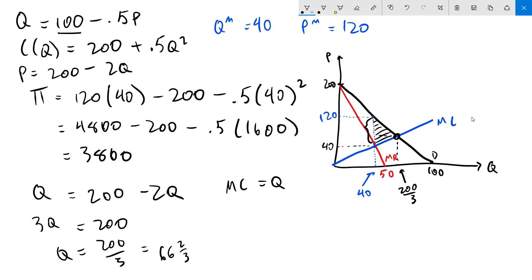We now have everything we need to figure out the deadweight loss. It's a triangle so we have one half times base times height. Base is 120 minus 40. The height is 200 thirds minus 40. This comes out to 3200 thirds which is 1066 and 2 thirds.